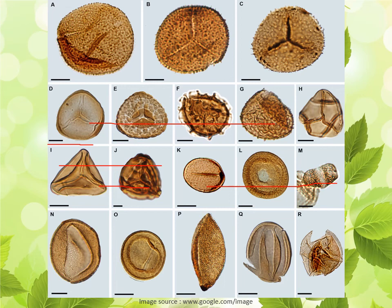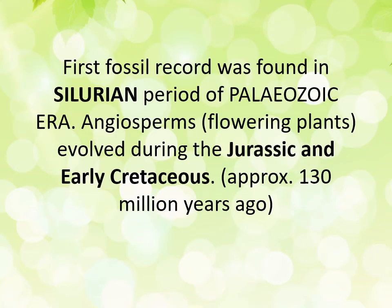If we look at the gross evolution of plants, the first fossil record of land plants was found at the end of the Silurian or in the early Devonian time of the Paleozoic era. The angiosperms — that is the flower-bearing plants — evolved during the Jurassic and early Cretaceous time. Soon after that, birds and mammals appeared in vast numbers, so plant evolution basically supported the evolution of animal groups.